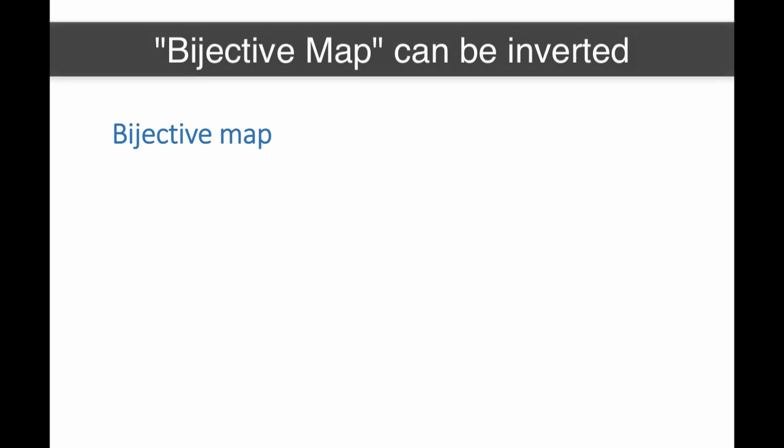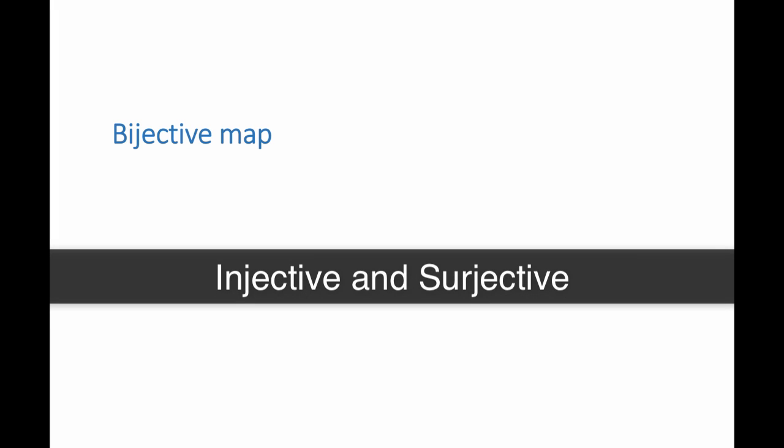The third and last kind of maps that we are going to talk about is a bijective map. A bijective map is a map that can be inverted. And for a map to be inverted, it has to satisfy two conditions. It has to be injective and it has to be surjective.